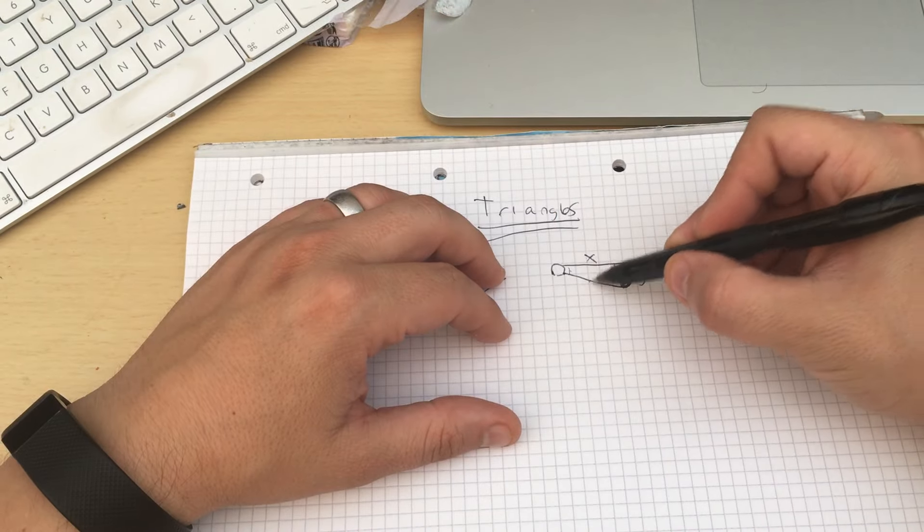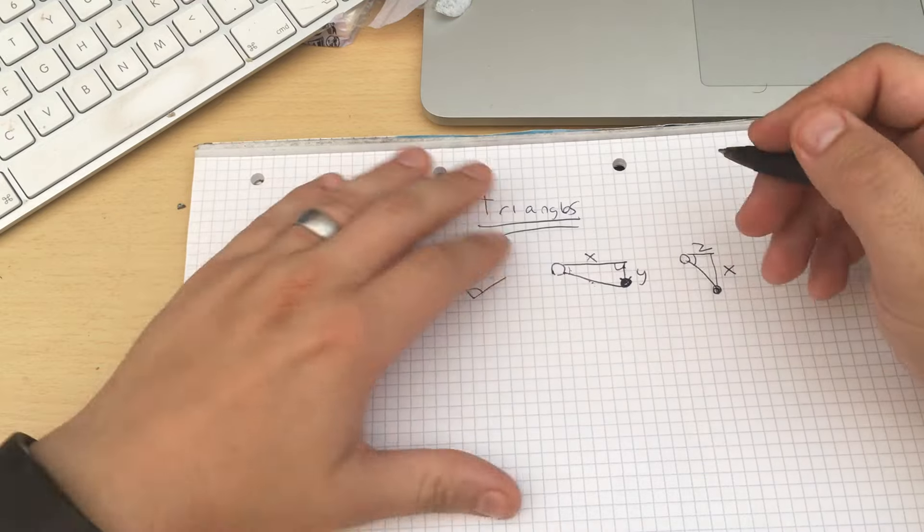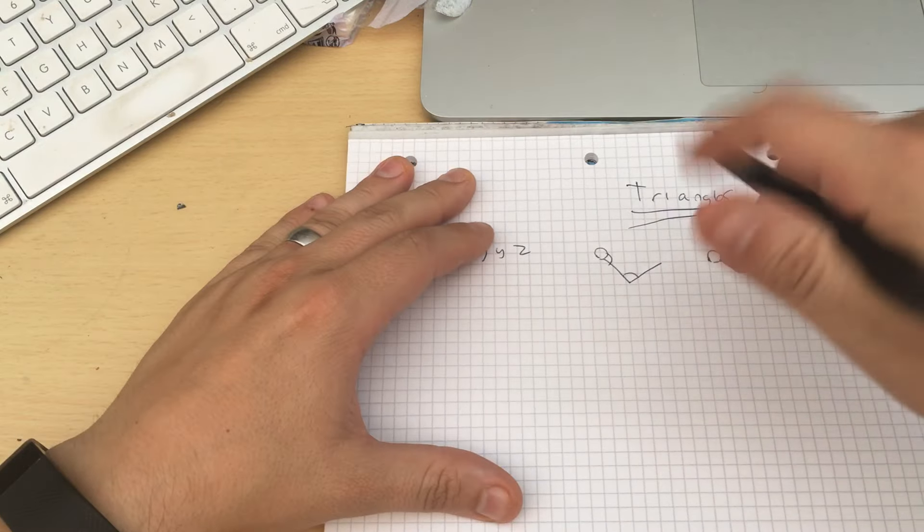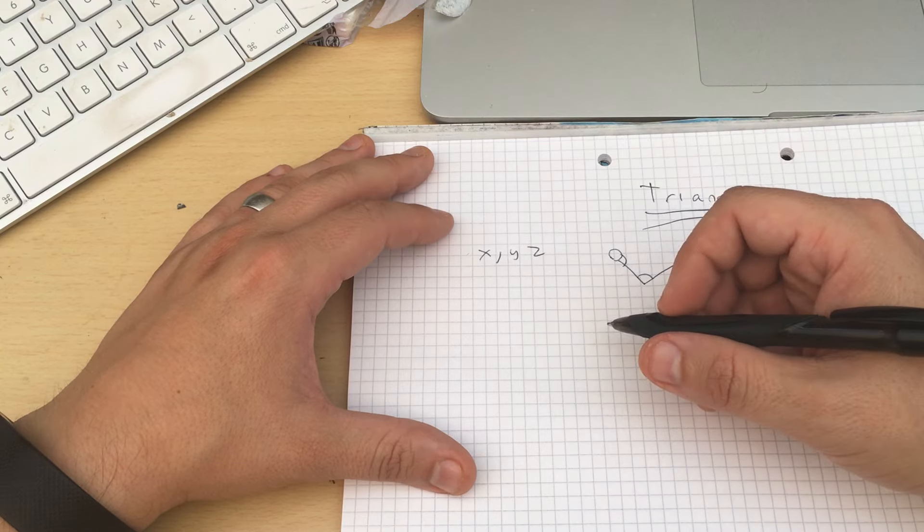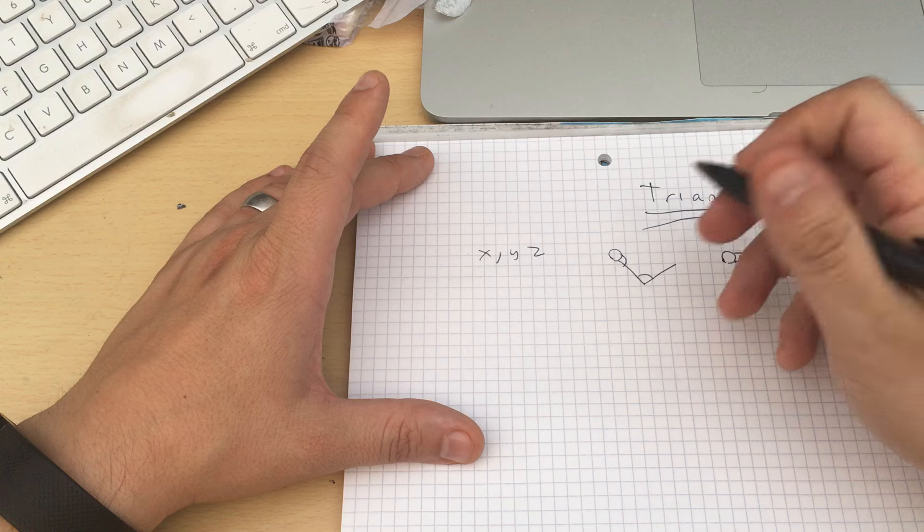But you also get the hypotenuse, which, with trigonometry, if you know the three sides of a triangle, you can work out its angles. So this is the bit that was the most powerful.